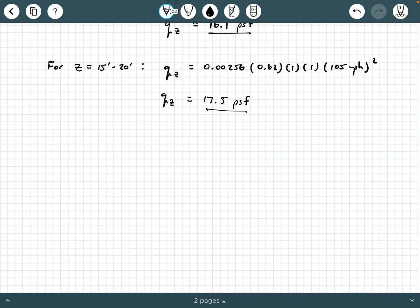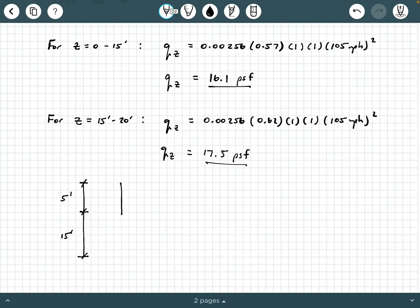And so what that means is the velocity pressure on the walls of this building are going to be the following. If this is 15 feet and this is the rest of the 5 feet, we're going to have a velocity pressure distribution that looks like this, and this is the 17.5 PSF. And then a little bit smaller than that, we're going to have the 16.1 PSF. And then this would be like if it's acting on that wall surface.